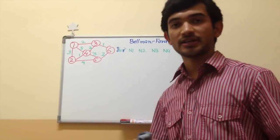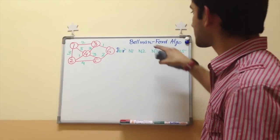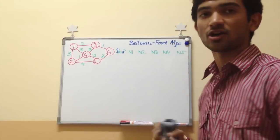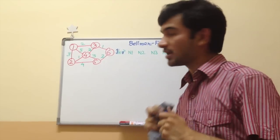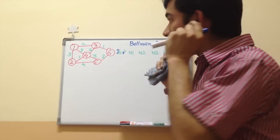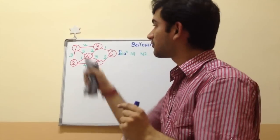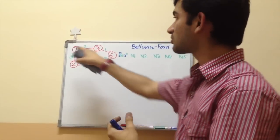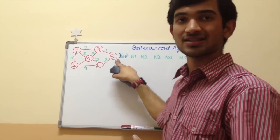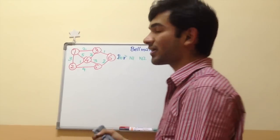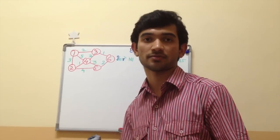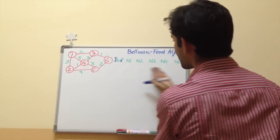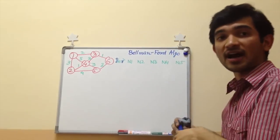Hello everyone. In this video I will discuss how the Bellman-Ford algorithm works. It is about finding the shortest path from node 1, which I will consider as the source, to the destination node 6. I need to find the shortest path. It works on the principle of making a table of iterations.